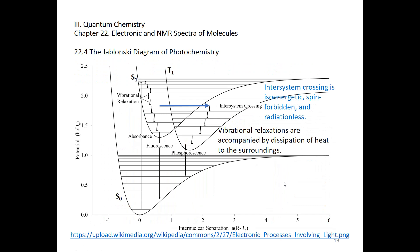This is also a Jablonski diagram. In this diagram we have S0, the ground singlet electronic state; S1, the first excited singlet electronic state; and T1, the first triplet electronic state. Going from S1 to T1 is called inter-system crossing, which involves the flip of electron spin — this is spin-forbidden, but it can happen. All the wiggle arrows represent vibrational relaxations. From bottom up, this is absorption — the molecule may absorb a photon and undergo the electronic transition from the S0 ground singlet state to S1.